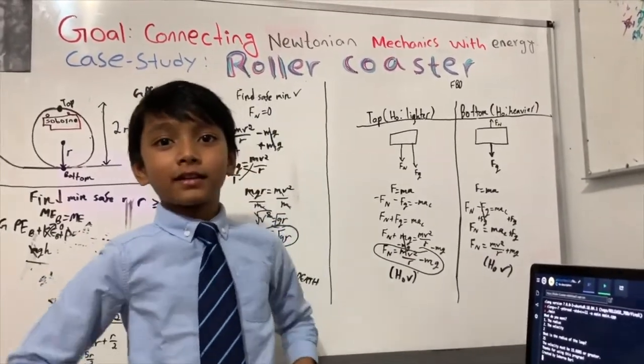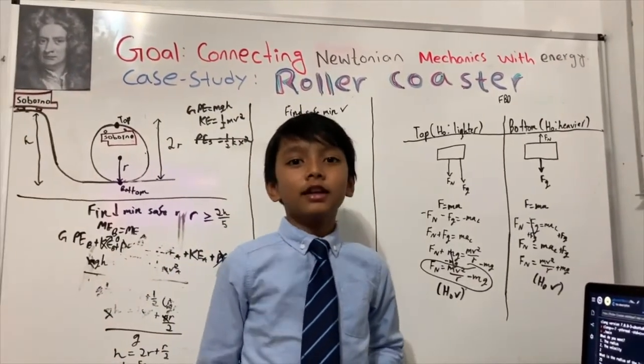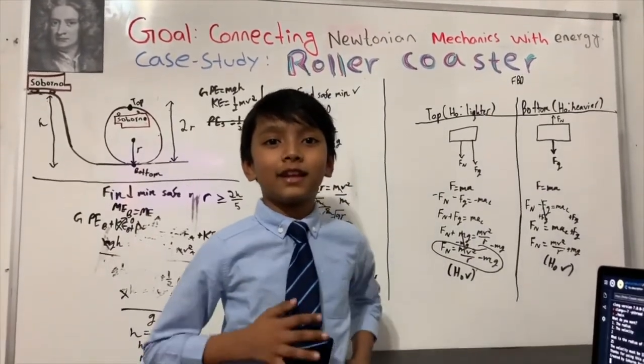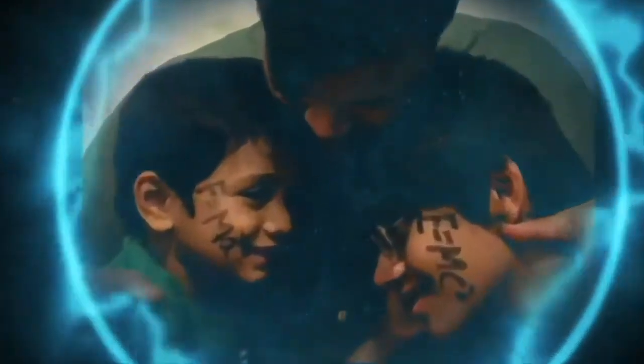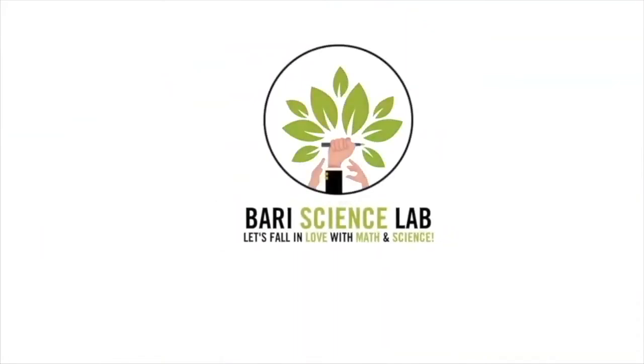And now you've learned all the physics of roller coasters. Now you won't look at roller coasters the same way again, I bet. Roller coasters are a physics lesson waiting to be found. That's what you learned from today's lesson. Bye. Subscribe to Bari Science Lab to fall in love with math and science, especially programming.